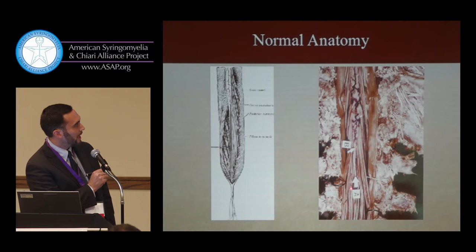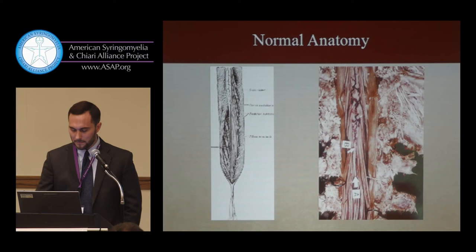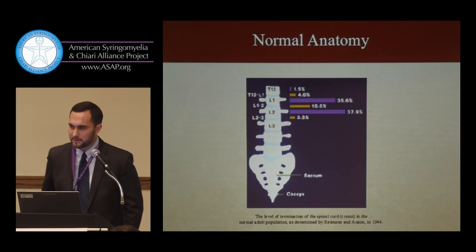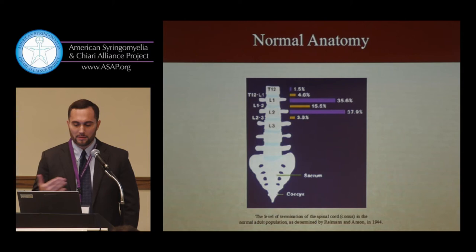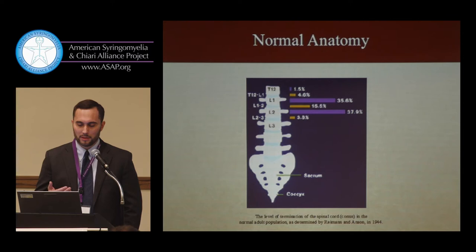In 1944, Raymond and Arson studied cadavers to determine where the spinal cord ends in normal human beings. They found the normal level was somewhere around L1-2, and it's commonly accepted that the normal level is around L1-2. When the conus is well below that level, it usually indicates significant pathology.